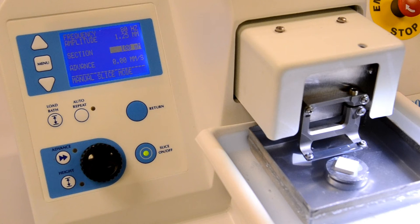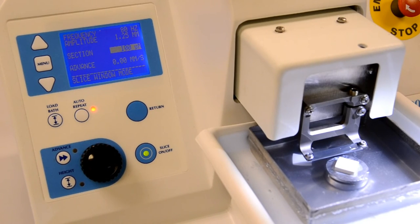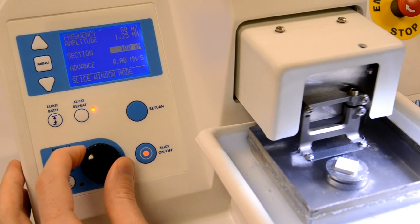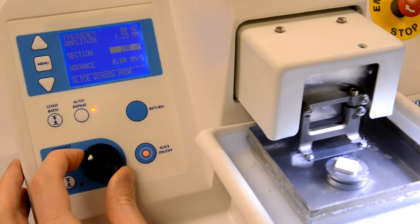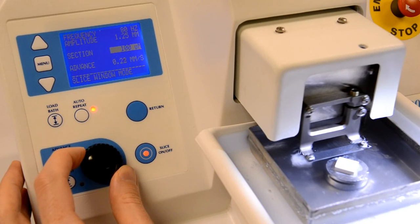In the previous chapter, we showed how to adjust the slicer and take a specimen slice. If you now press the auto-repeat key, the slicer will enter the slice window mode. If you now press the slice on-off key, the slicer will automatically take another cut, remembering where the cut was started and stopped, together with the section thickness you specified.